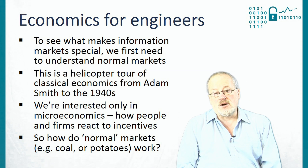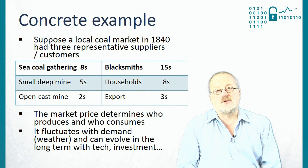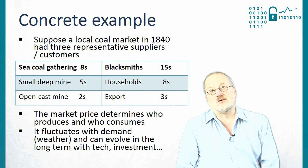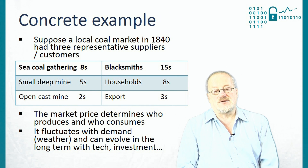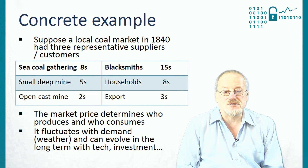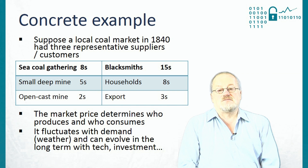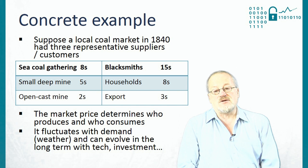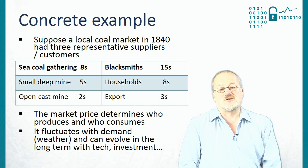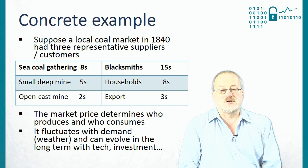As a concrete example, let's think about how the coal market might have worked in Newcastle in the 1840s. For the sake of simplicity, you might have had three representative suppliers and three representative customers.